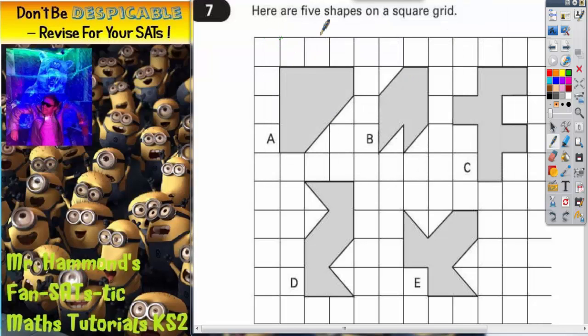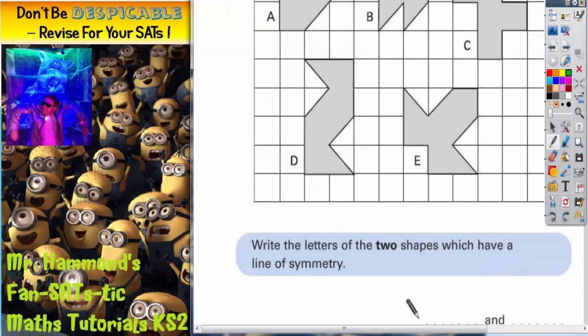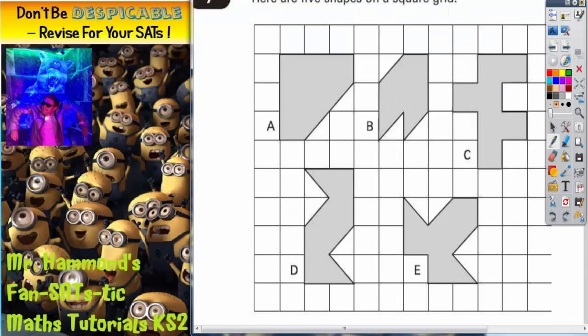Question number seven. Here are five shapes on a square grid. It says write the letters of the two shapes which have a line of symmetry.